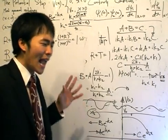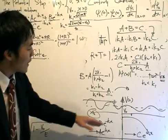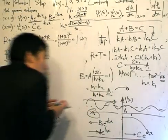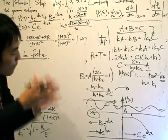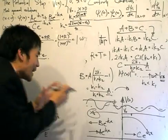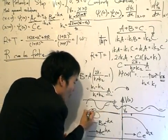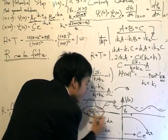So that tells us that even though the energy of the particle is greater than V-naught, as it hits the potential step, there is still a portion of that particle that get reflected in this direction over here.